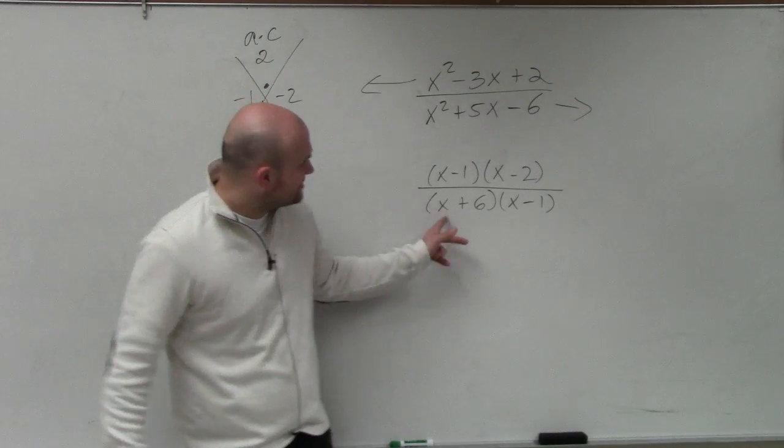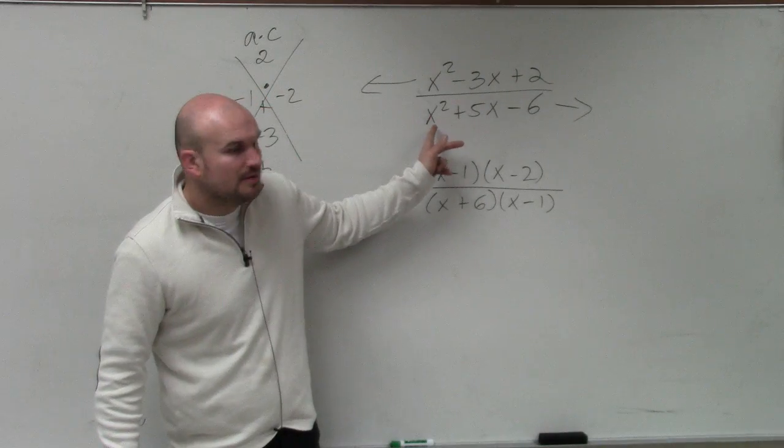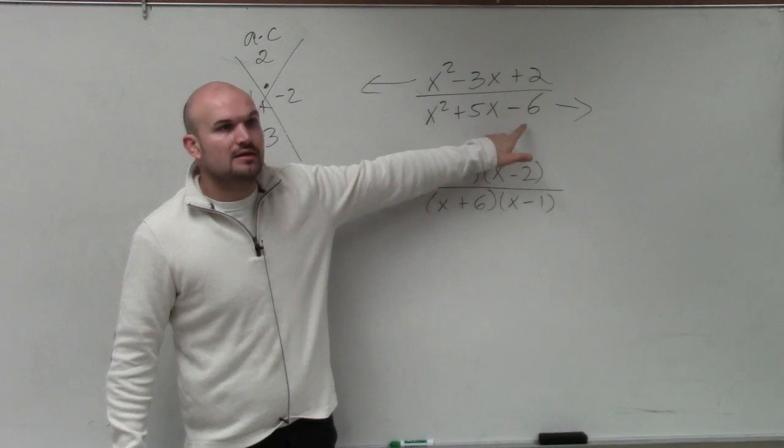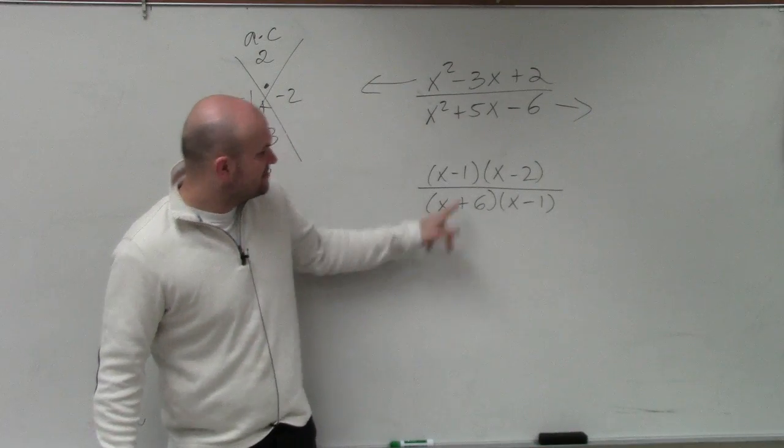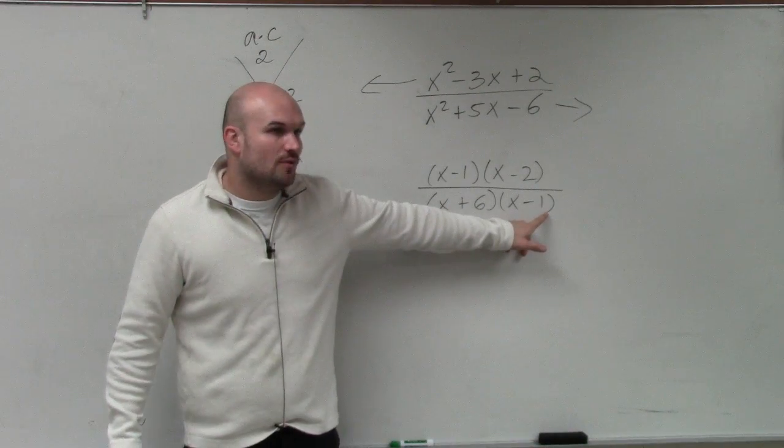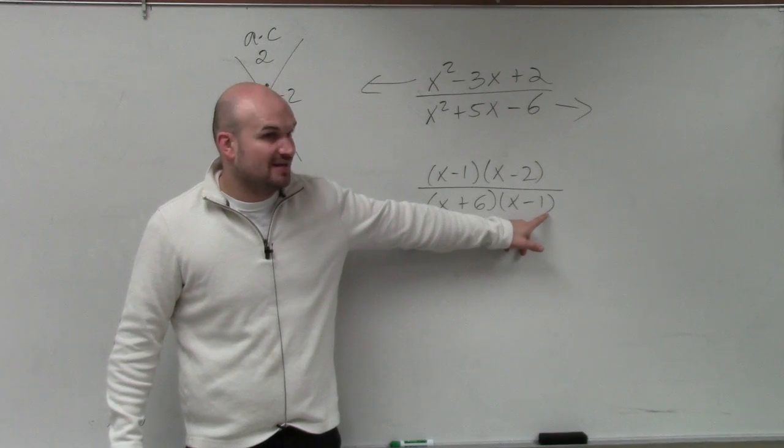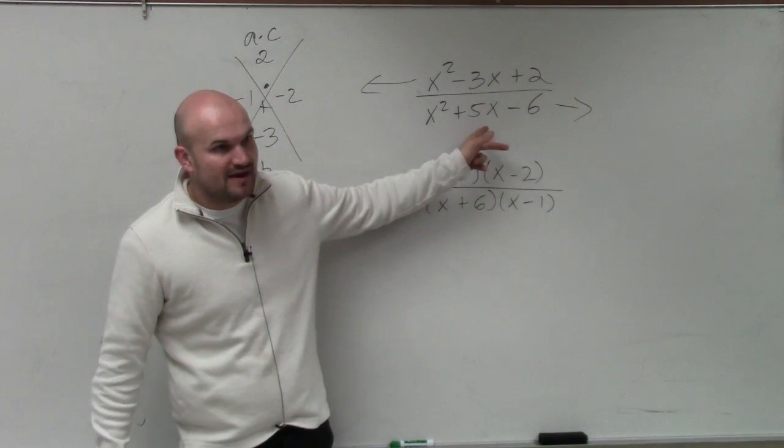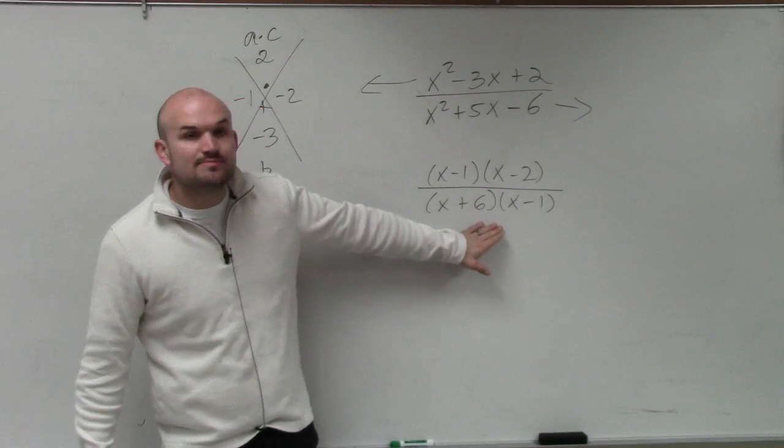And let's double check that. Does x times x give you x squared? Yes. Does 6 times negative 1 give you negative 6? Yes. Does 6 times x plus 1 times negative 1, or x times negative 1, which would be negative x plus 6x, does that give you positive 5x? Yes. So now that's my factored form.